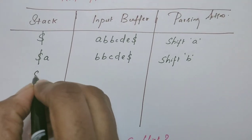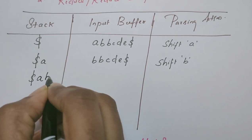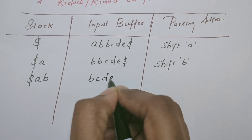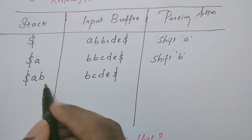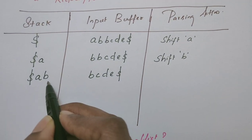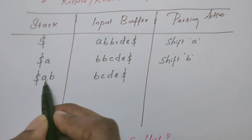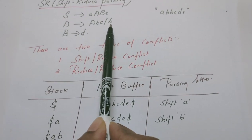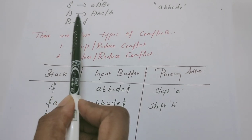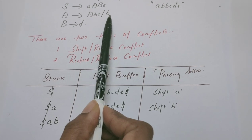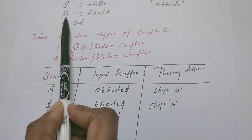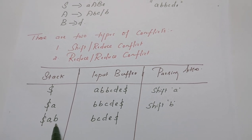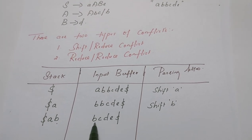Once B is shifted, the stack contains A and B is at the top of the stack. The remaining string is B, C, D, E, dollar. Now, whether B can be reduced or another symbol is to be shifted — we will see now. From the grammar we can see that A derives B, so B can be reduced to A. The question is whether this B is to be reduced to A or shifted.